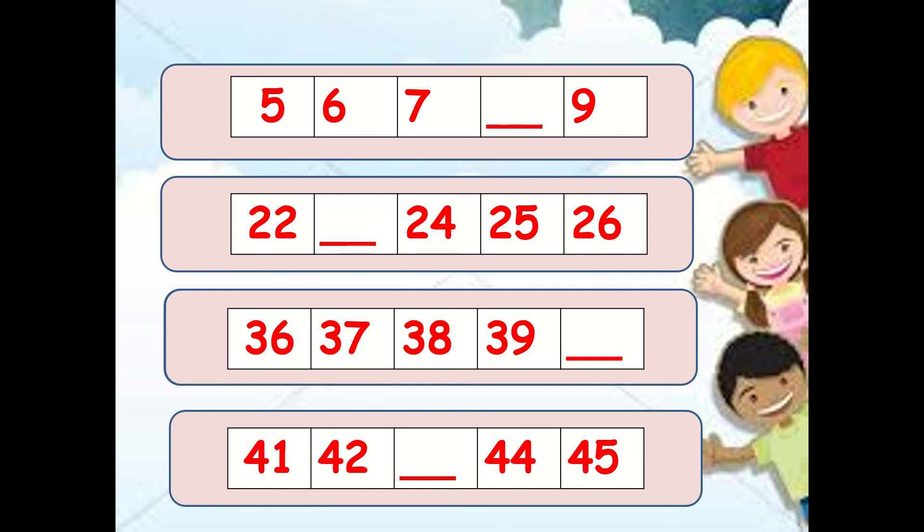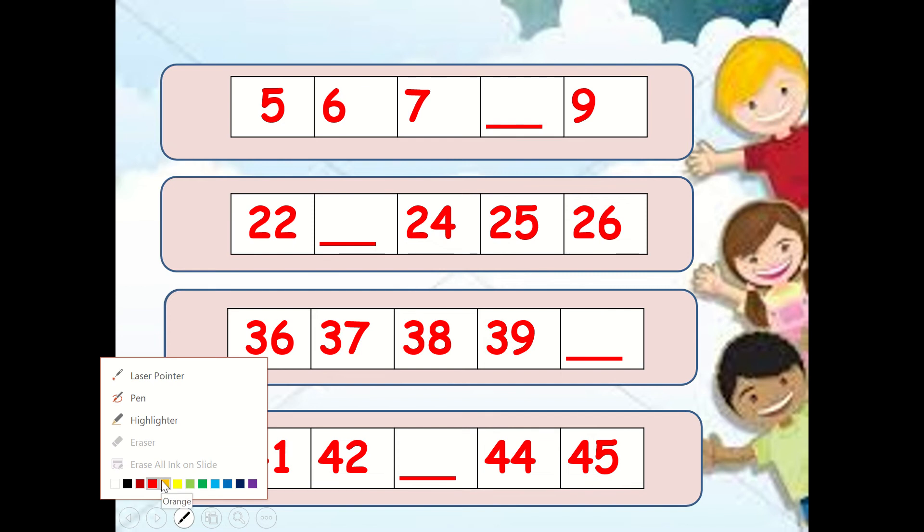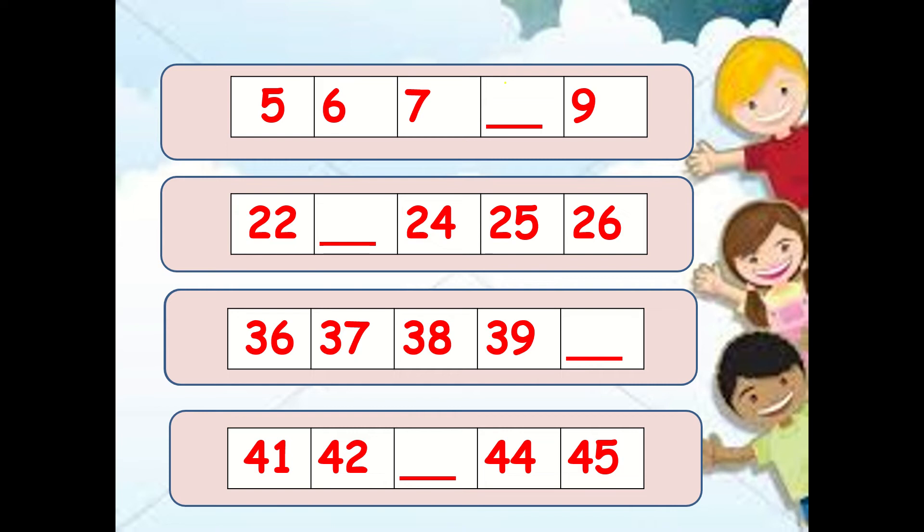Now, let us complete the pattern given here. As what we did before in our past lesson, let us write the missing number. This is as simple as counting on to find the missing number. Five, six, seven. What is missing? Very good. Eight. Next, 22. What is missing here? Then 24. Yes, you are right. Twenty-three. How about the next one? Thirty-six, thirty-seven, thirty-eight, thirty-nine, and forty. Well done, KGs. How about the last one? Forty-one, forty-two, and forty-three. Good job, KGs.